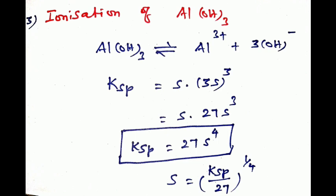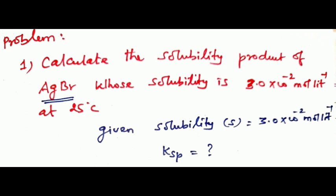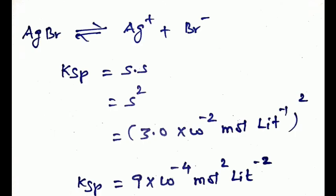First problem: Calculate the solubility product of silver bromide whose solubility is 3.0×10⁻² mol/L at 25°C. The solubility S equals 3.0×10⁻² mol/L. Since AgBr ionizes as Ag⁺ + Br⁻, the solubility product equals S × S, that is S squared.